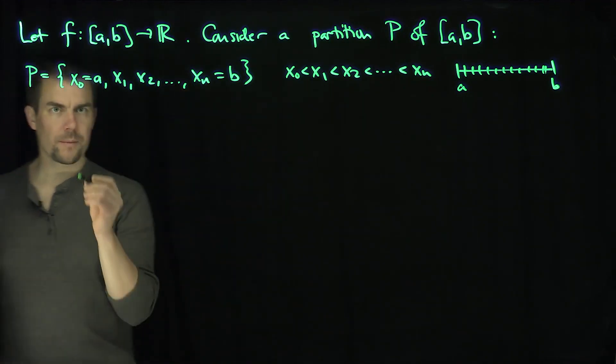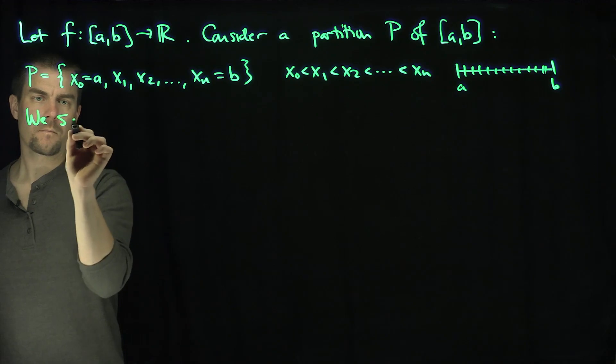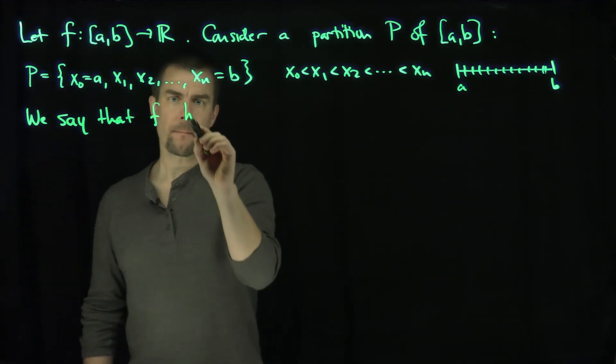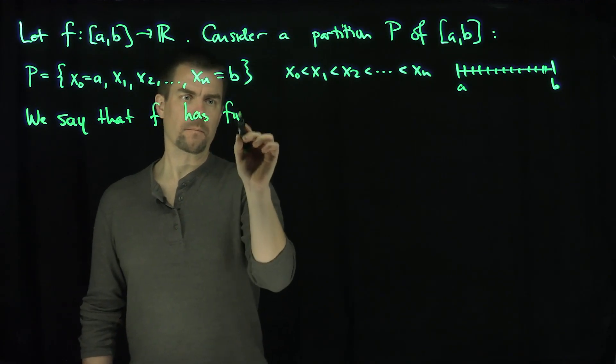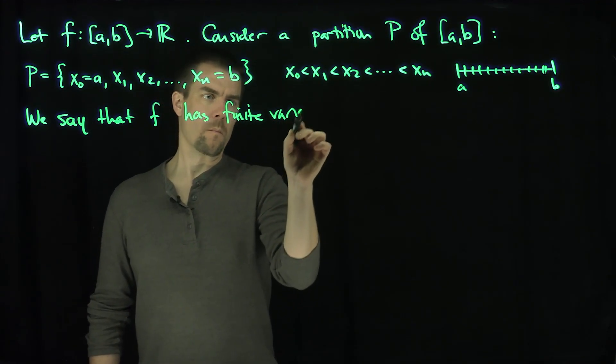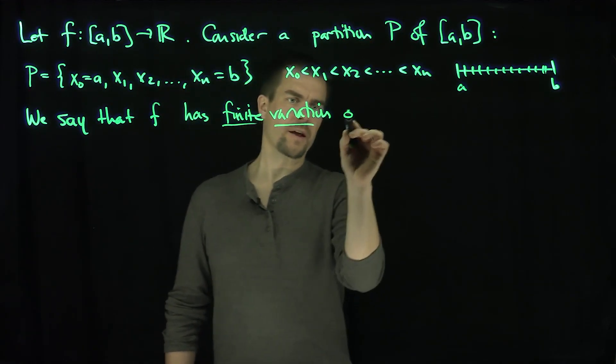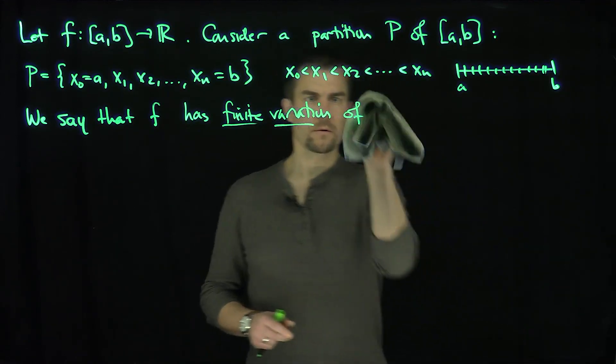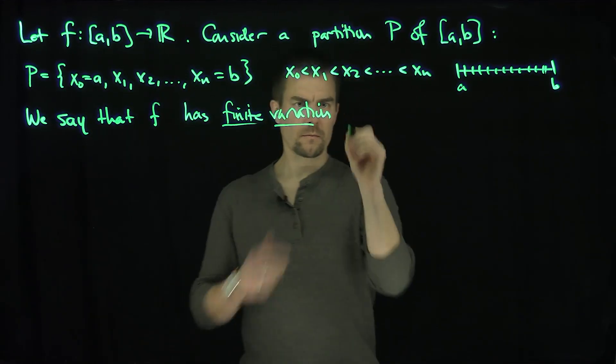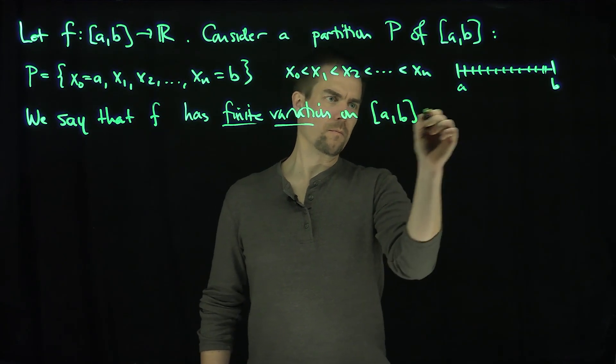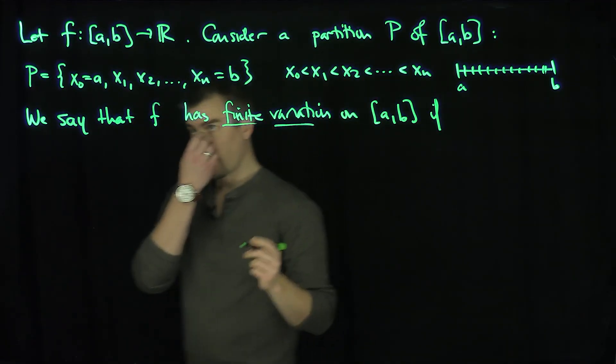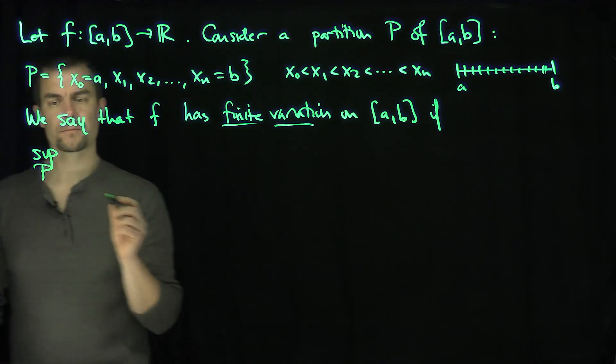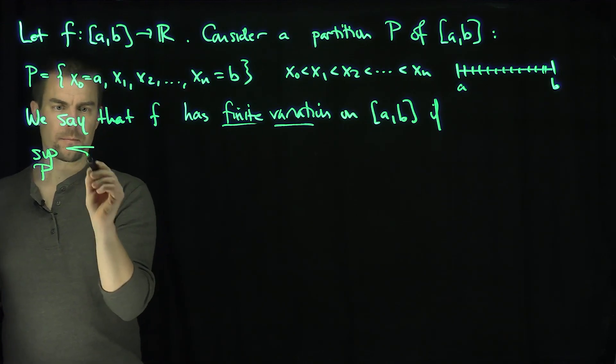Now I'm going to define: we say that f has finite variation on [a,b] if what?